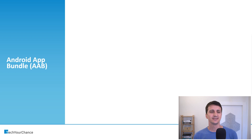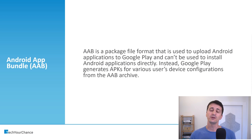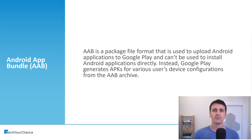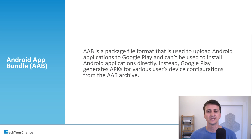The last type we're going to discuss are Android App Bundles, or AAB files. AAB is a package file format used to upload Android applications to Google Play and can be used to install Android applications. When you generate AAB files from your Android projects, you cannot just take those files and install them directly on Android devices. You must upload these packages to Google Play, which then generates APKs for various user device configurations from these AAB archives.